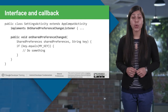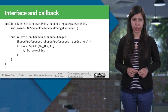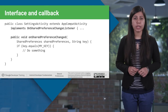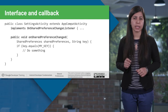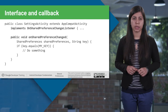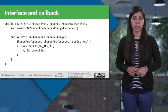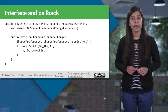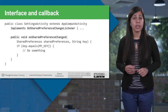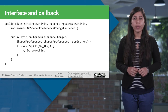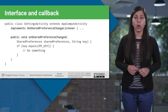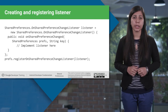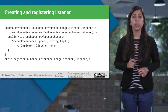In order to listen to changes, you have to follow these steps. First, implement the SharedPreferences OnSharedPreferenceChangeListener interface within your component. Then, register the listener with the registerOnSharedPreferenceChangeListener method on SharedPreferences. You register the listener in the appropriate methods, like onResume of the activity, and unregister it in onPause of the activity. Finally, override the onSharedPreferenceChanged method in order to listen to preference changes. This is how we implement the OnSharedPreferenceChangeListener interface and the onSharedPreferenceChanged callback method.